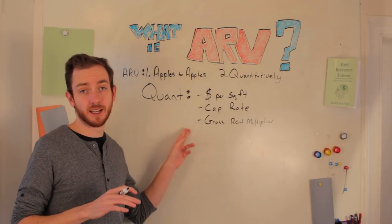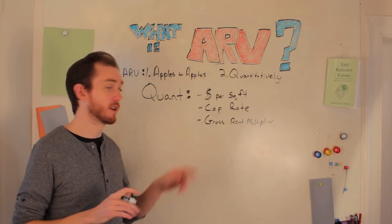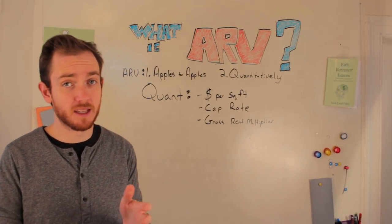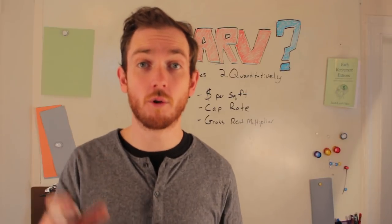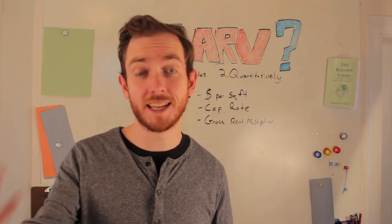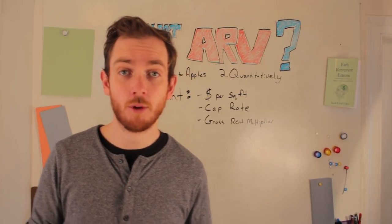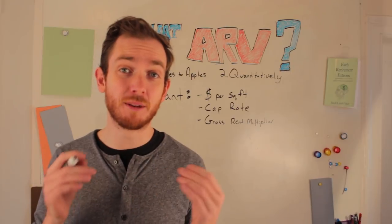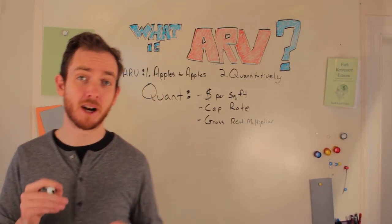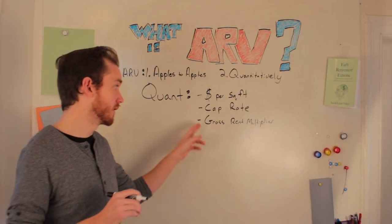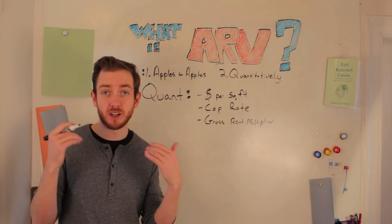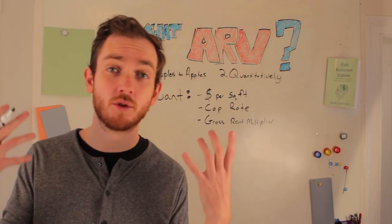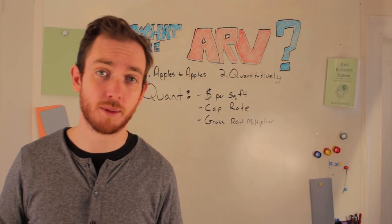Another common calculation is the gross rent multiplier. This may simply be that buyers are used to paying maybe three, four, seven, or ten times the gross rent for a property. It's going to be very dependent on your market — you'll need to determine this by talking to other real estate investors, realtors, and appraisers in your market.